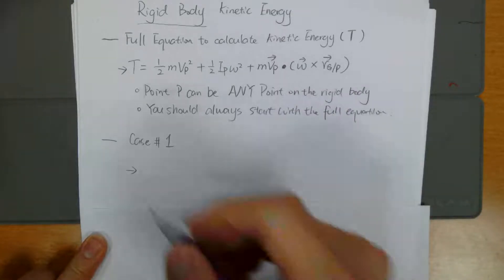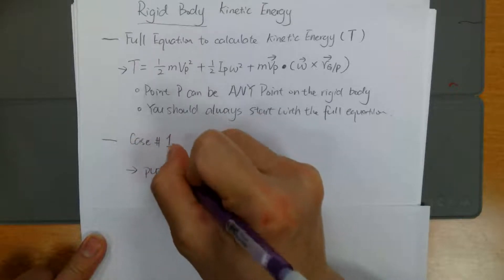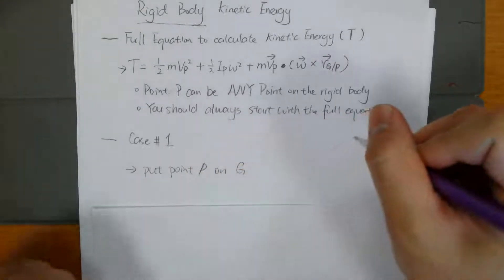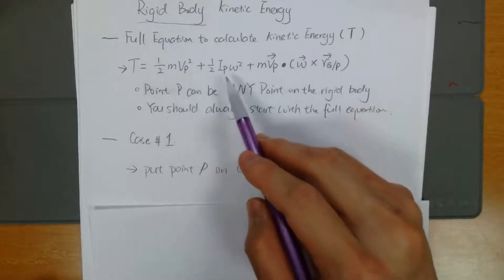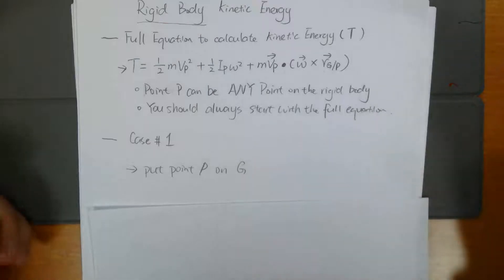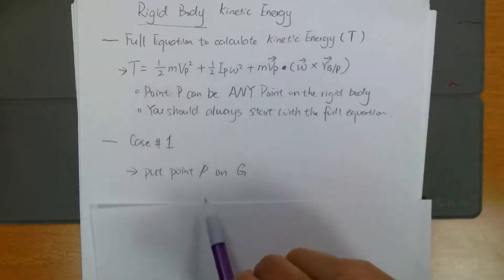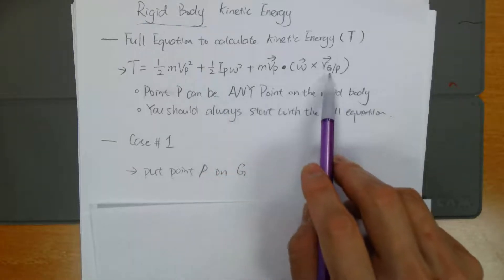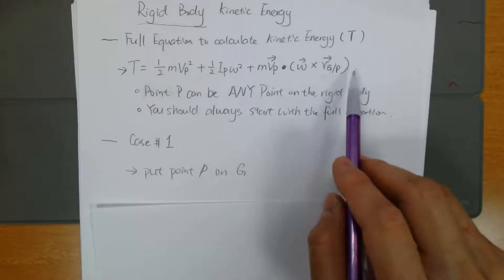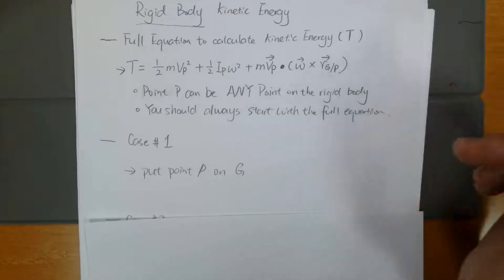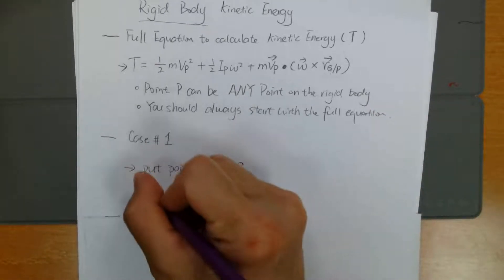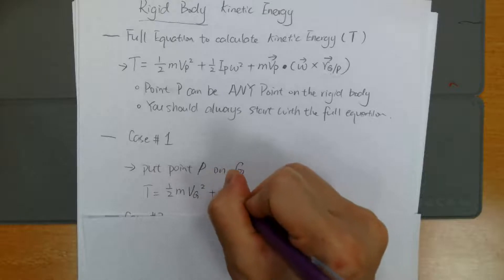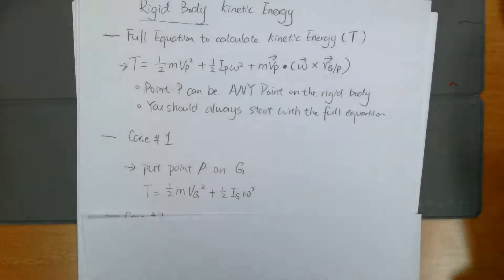So the first case is you can put your point P on your mass center G. So you can select this point P on the mass center of the rigid body. Once you pick point P as your point G, if you look at this term, the position vector Rg/P is going to turn to Rp/P, which is going to be zero. So your equation can be simplified to one-half mvg squared plus one-half Ig omega squared. That's it.